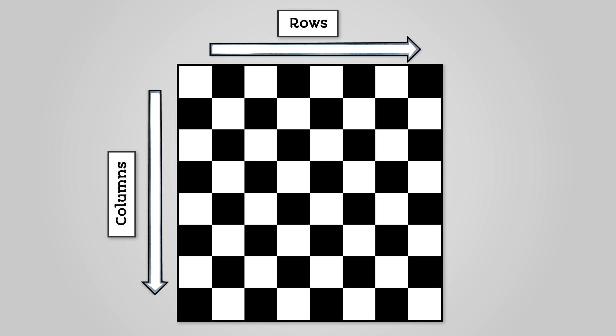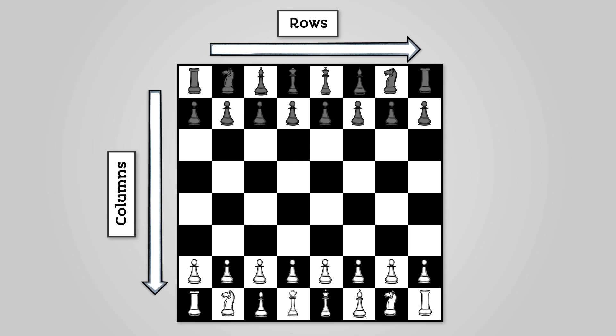For example, you can see here a typical chessboard with all the pieces set up for the start of a game. The pieces are located in rows and columns. This is a two-dimensional array.